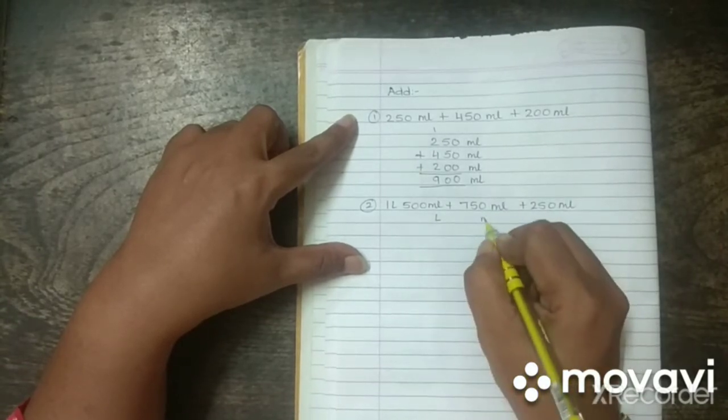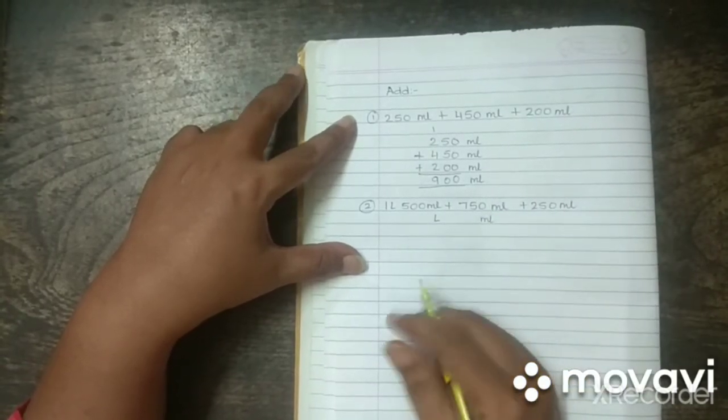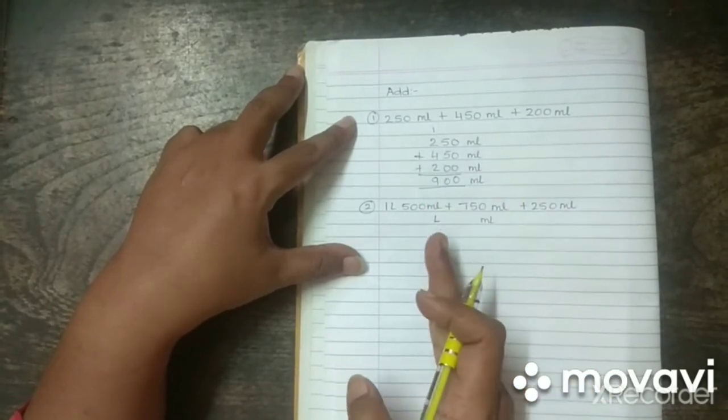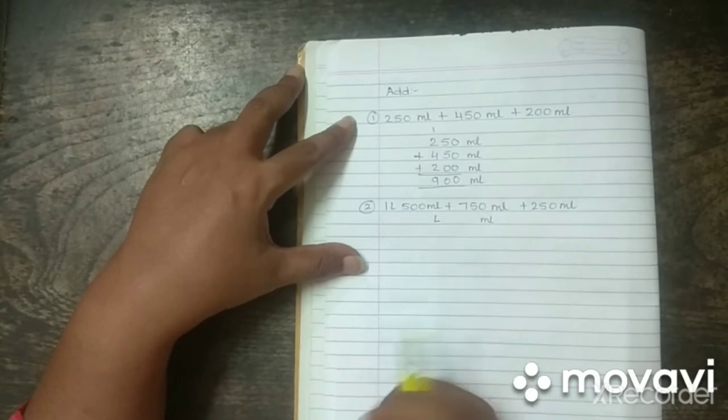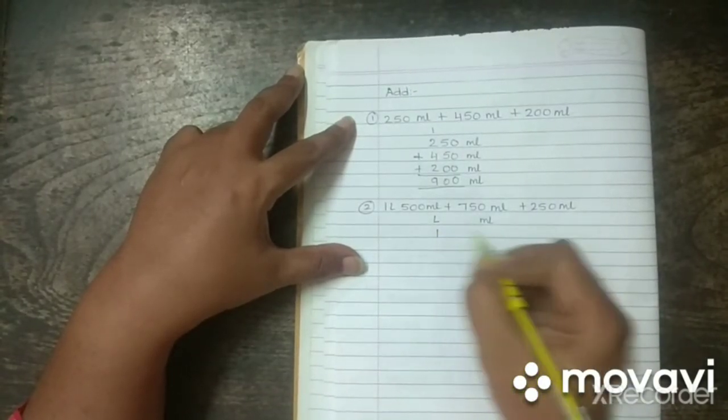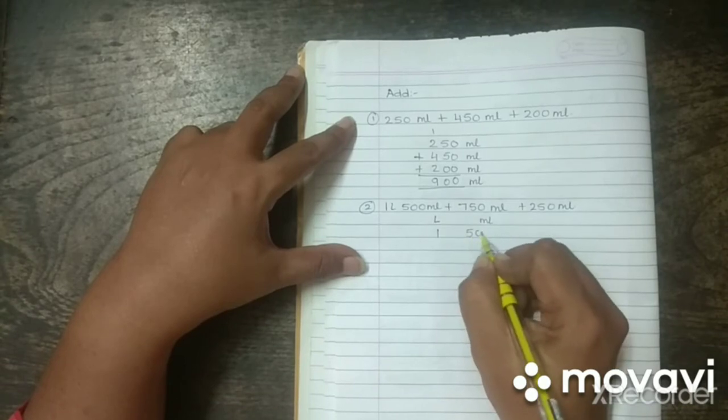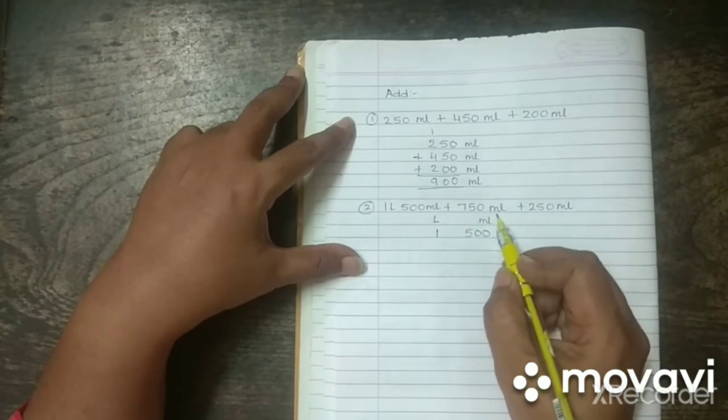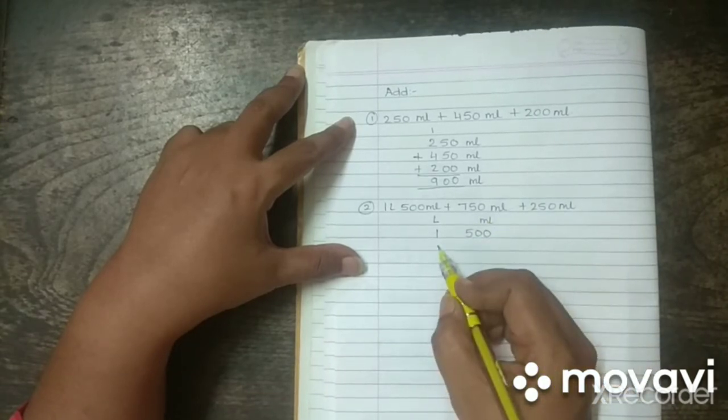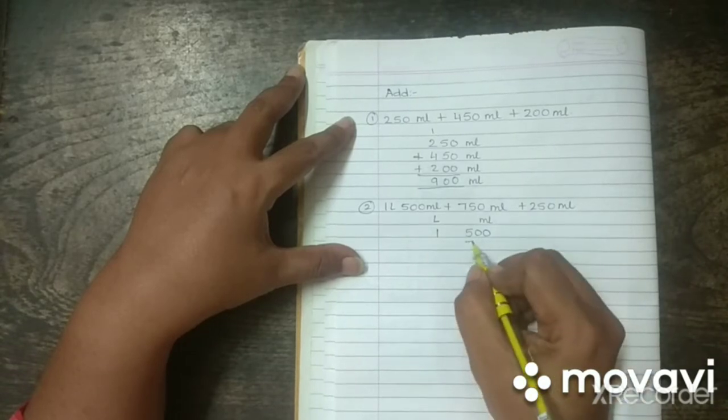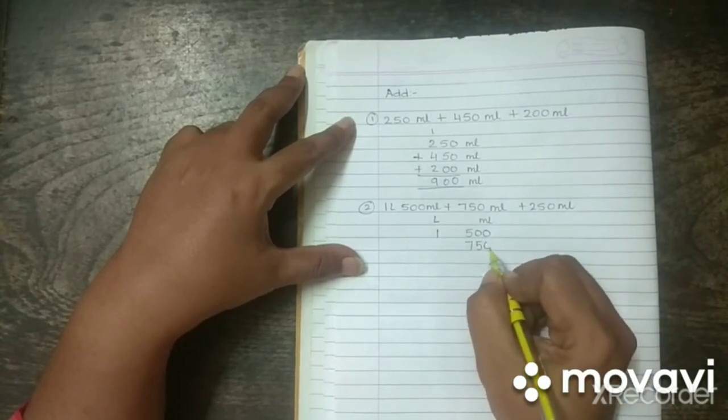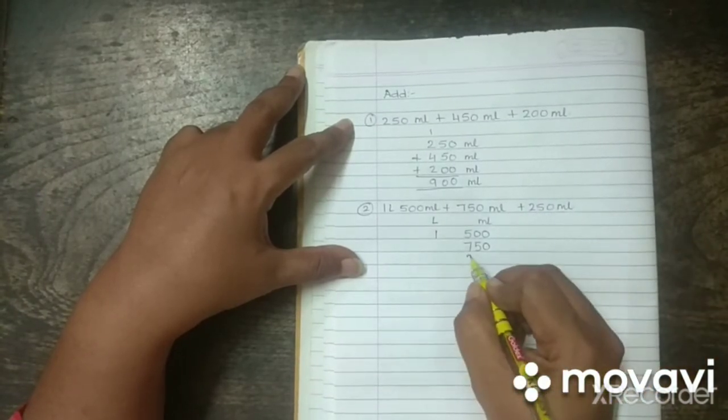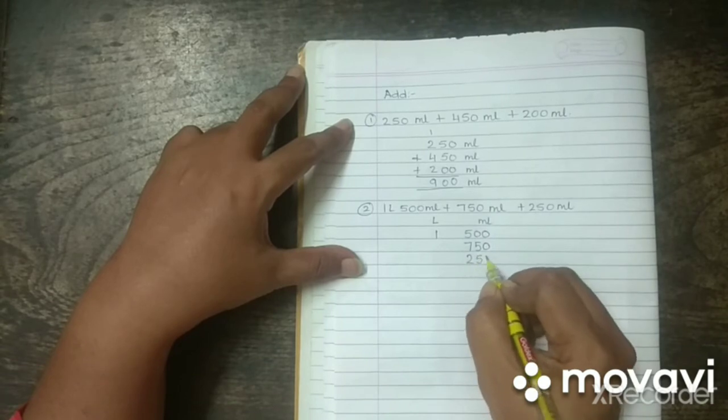So, here we have liters and here we have milliliters. Milliliters ke neche milliliters aega, liters ke neche liters aega. So, it gets easy to add up. First is 1 liter, 500 ml. Okay? Next is only 750 ml. So, you don't have to write anything in the liters place. We will write 750 ml. And then last number is 250 ml. That is again no liters. So, only 250 ml.